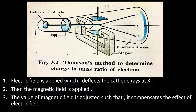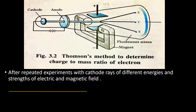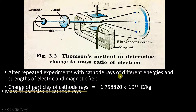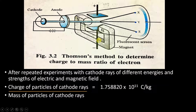With the help of this experiment, Sir J.J. Thomson was successfully able to find the ratio: charge of particles of cathode rays divided by mass of particles of cathode rays equals 1.758820 × 10¹¹ coulombs per kilogram. After repeated experiments with cathode rays of different energies, electric fields of different strengths, and magnetic fields of different strengths, he consistently found this value.